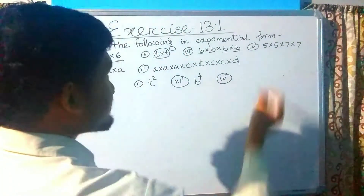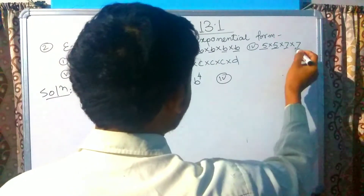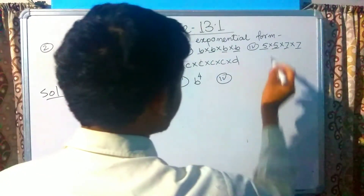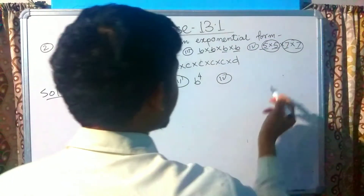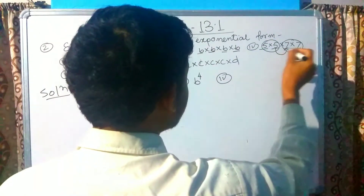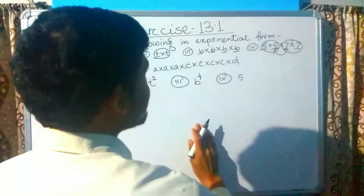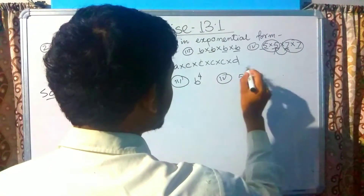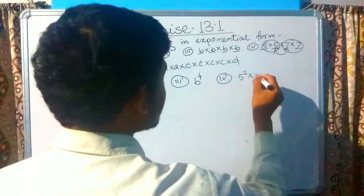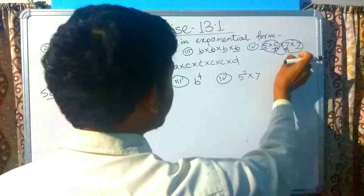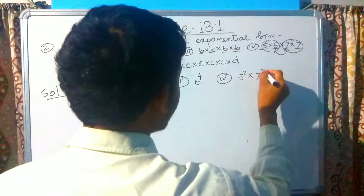The fourth one is 5 multiplied by 5 multiplied by 7 multiplied by 7. The two 5s are the same and the two 7s are the same, but 5 and 7 are not the same. So we write 5 given 2 times as 5 squared, multiplied by 7 given 2 times as 7 squared. The answer is 5 squared multiplied by 7 squared.